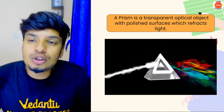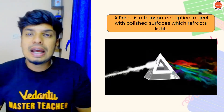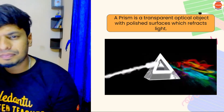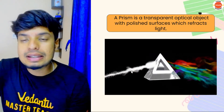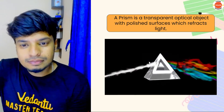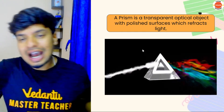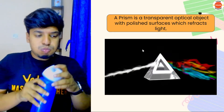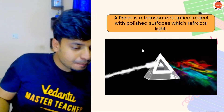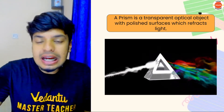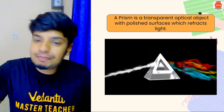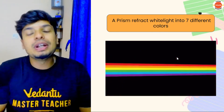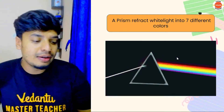A prism is a transparent optical object with a polished surface which has the capability of refracting light. It looks like a crystal. Whenever light enters into the prism, the prism is a different medium and air is a different medium, so refraction happens, internal reflection happens, then it splits into its component colors. So a prism refracts white light into its seven different colors — that is VIBGYOR.